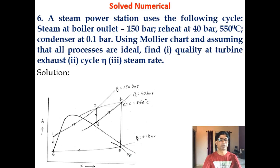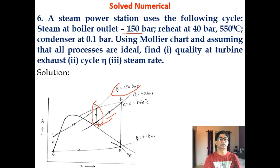This is the Mollier chart diagram. Steam at boiler outlet is 150 bar, so that is pressure 1 to 2 — this line at 150 bar. Reheat at 40 bar means there are two stages of expansion. First stage expansion is 2 to 3, and 3 to 4 is the reheat which takes place at 40 bar to a temperature of 550 degree Celsius. So T2 is also 550 degree Celsius, meaning reheated to original temperature.